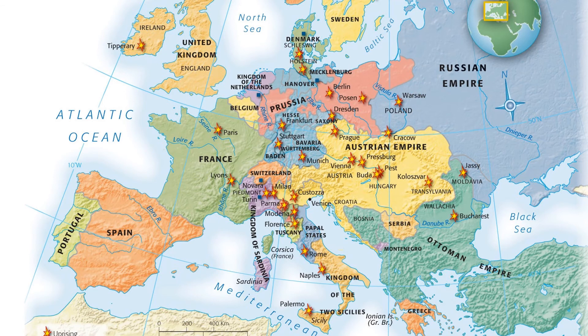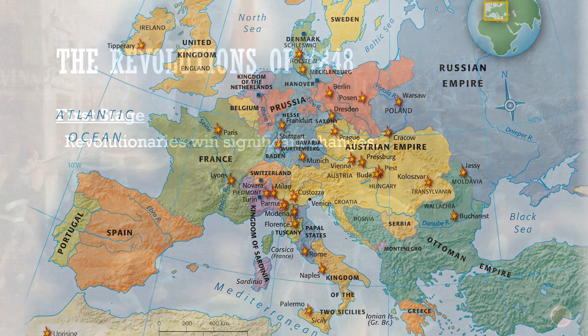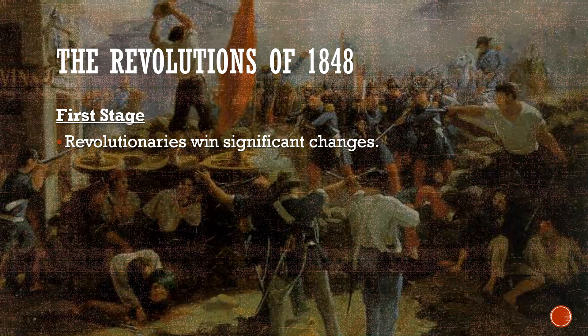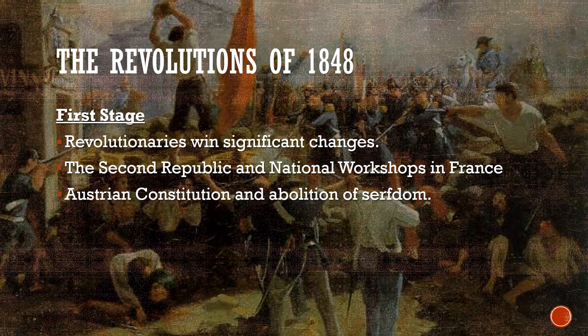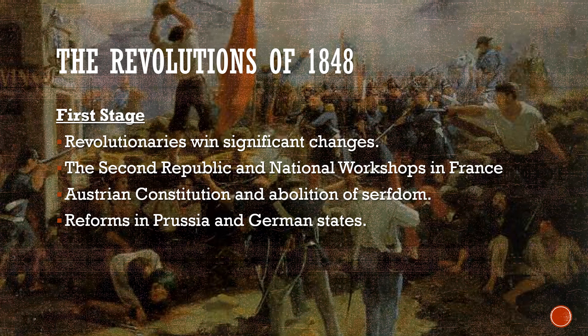Here you can see a map showing just how many places in Europe experienced major uprisings or rebellions between 1848 and 1849. In no other year had this many revolts broken out simultaneously. In many cases, the revolutions led to reforms and in fact new constitutions — on the whole, most of the uprisings of 1848 were successful initially. In the first stage of the revolutions of 1848, the revolutionaries won significant changes. For example, in France we saw the second republic initiated — the monarchy was again dismantled. To deal with massive unemployment across France, the government created national workshops: places where unemployed men could go for work and be guaranteed work and food. In Austria, the Empire adopted a very liberal constitution and saw the abolition of medieval serfdom — one of the last places that still had remnants of the Middle Ages in terms of the legal status of serfdom. And in Prussia and other German states, there were also reforms.